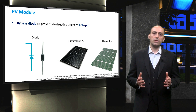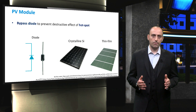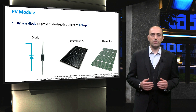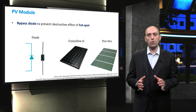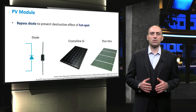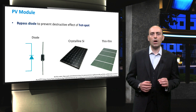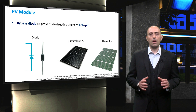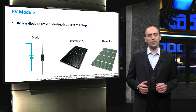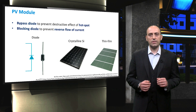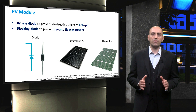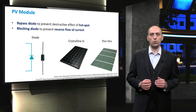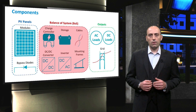In many modules, there are other important components. The first is the bypass diode, usually placed in the junction box of the module. It protects solar cells to avoid a so-called hotspot. Hotspots will be discussed later in the course. The second is the blocking diode, which prevents current from flowing from the external circuit into the PV module.